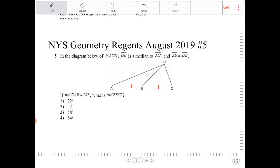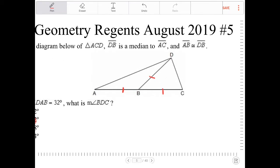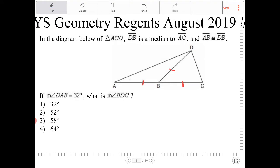AB is congruent to DB, so if AB gets one tick mark, DB also gets one tick mark. If angle DAB is 32 degrees,